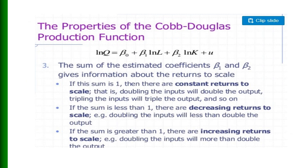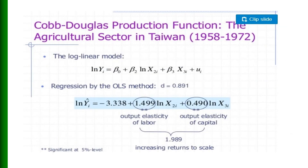If the sum of β₁ and β₂ is less than 1, there are decreasing returns to scale; if the sum is greater than 1, there are increasing returns to scale. For example, the estimated Cobb-Douglas production function for the Taiwanese agriculture sector for the period 1956 to 1972 shows an output elasticity of labor of 1.499 and an output elasticity of capital of 0.490. Their sum is approximately 1.989, which is greater than 1, indicating increasing returns to scale for the Taiwanese agriculture sector.